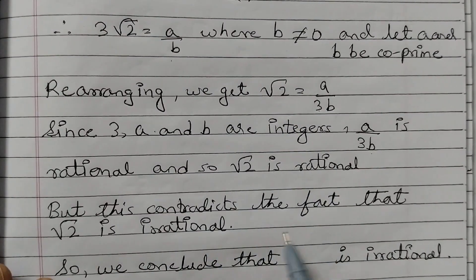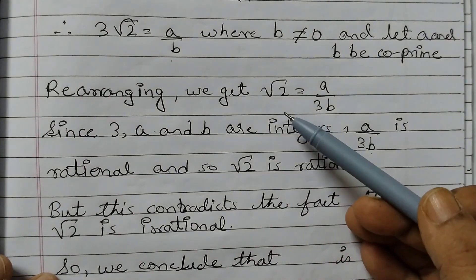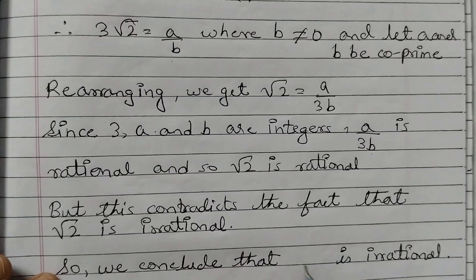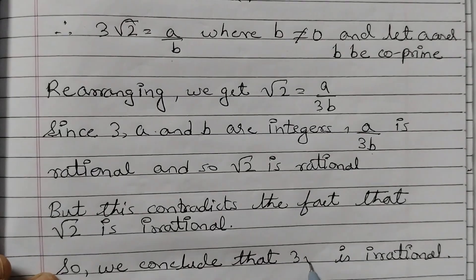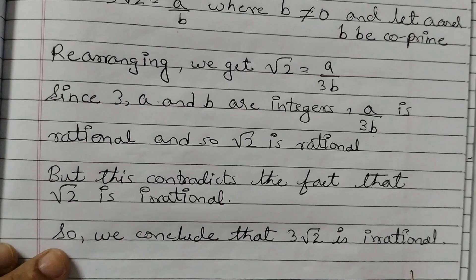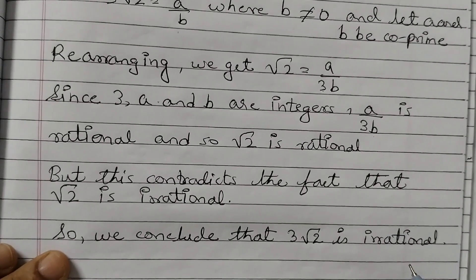So this contradicts the fact that root 2 is irrational. If I am saying that this is rational, that is a contradiction. So we conclude that 3 root 2 is irrational. So this is your final statement.